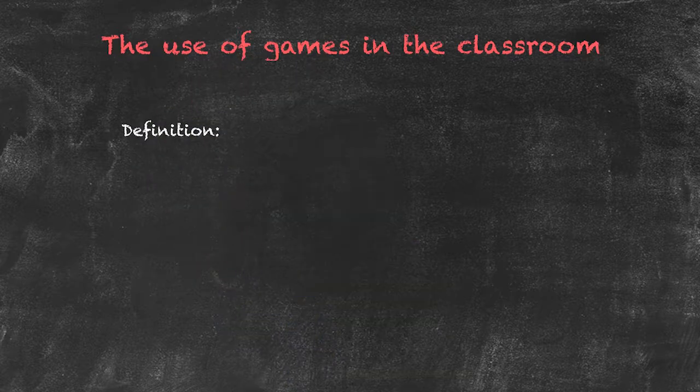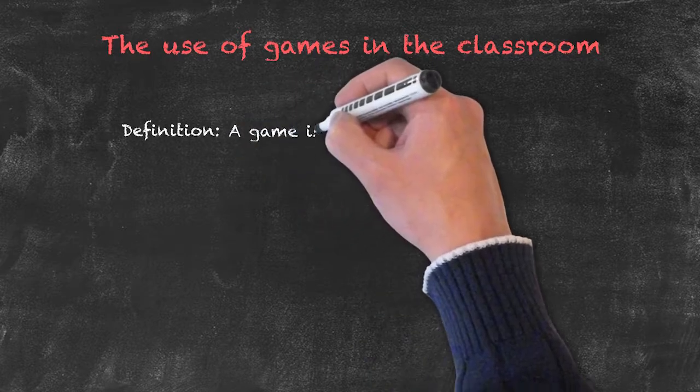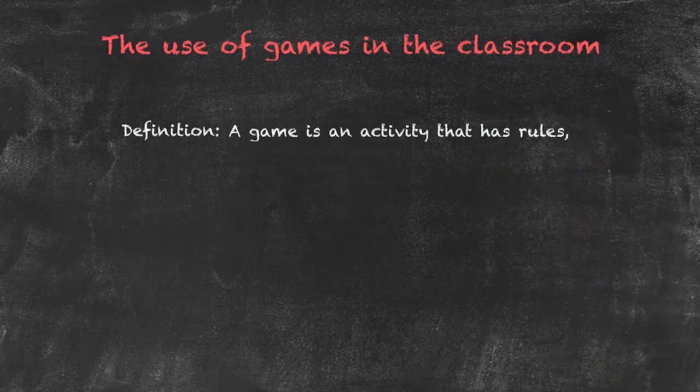We could start with a definition of what we actually mean by a game, and basically it has three components. A game is an activity that has rules.